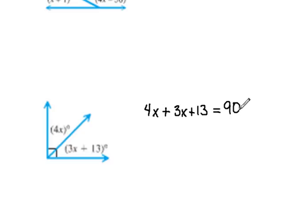And now once we have our equation written, it's just a matter of solving it. So we can put together our like terms on the left: 4x plus 3x would be 7x, and then we have plus 13 equals 90.